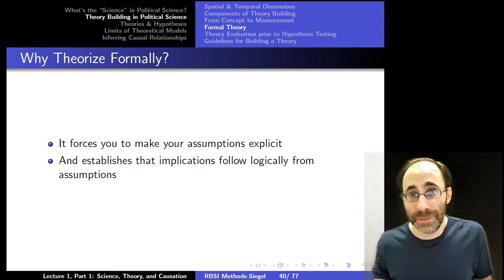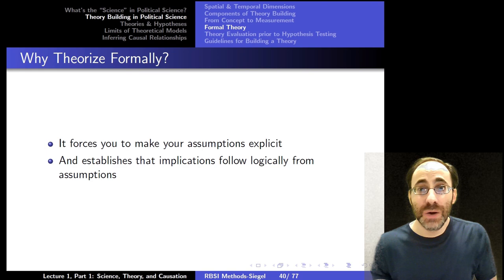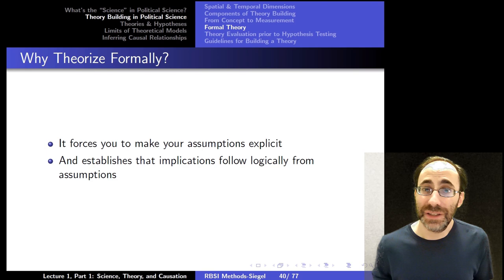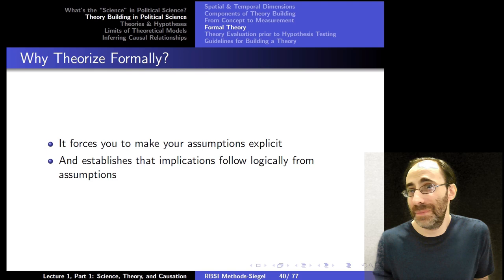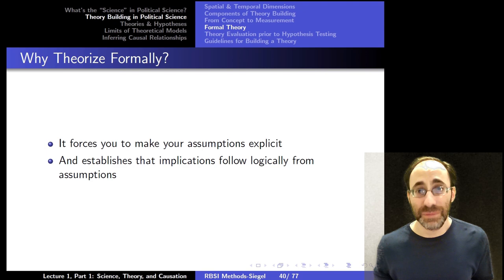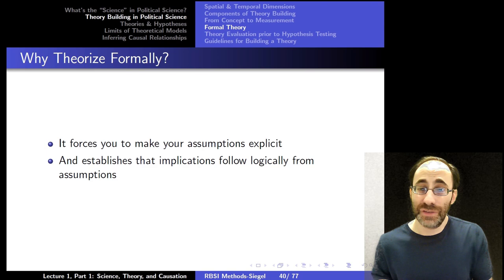However, when we're trying to make important arguments about, say, what policies are good, it is very important not to just jump from point A to point C without the interim step point B, because it might be the case that you got that wrong. That your jump was not justified. That it didn't follow from reality. By theorizing formally, what we're doing is forcing us to go through step-by-step and make sure every step in our logic is correct given our assumptions. We can't have jumps that aren't justified because all the jumps, all of our steps, follow directly from our assumptions.